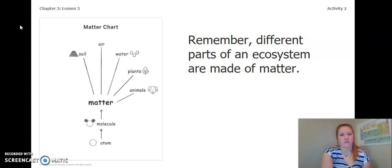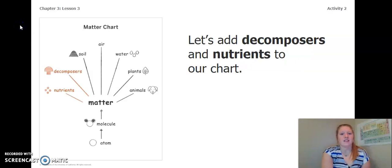Remember our matter chart. There are different parts of an ecosystem that are all made of matter. Let's add decomposers and nutrients to our chart because those are also made of matter. So now, we have animals are made of matter, plants, water, air, soil, decomposers, and nutrients are all made of matter.